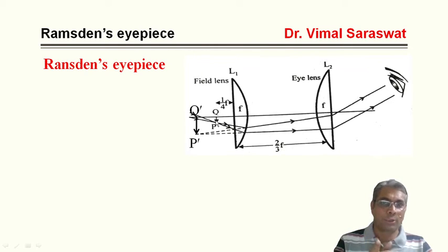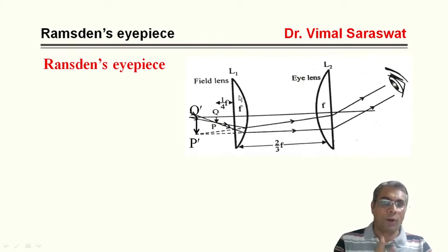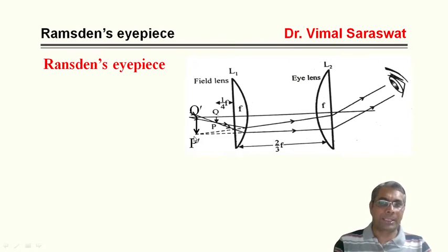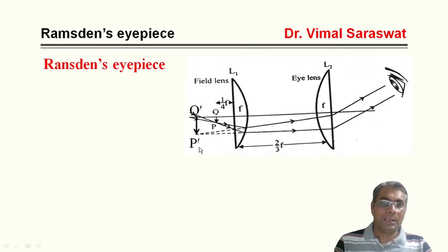Here PQ is the image of the object formed by the objective lens, and this image PQ serves as the object for field lens L1, which forms the image P'Q'. Since the final image is at infinity, P'Q' should lie at the focal plane of L2. This means its position will be f minus 2/3 f, that is, at a distance of f/3 to the left of L1.